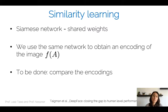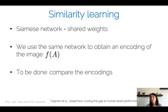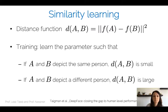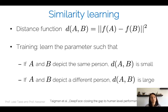Using the same network, we obtain encodings f(A) and f(B). We then compare these encodings: if A and B depict the same person, we want the encodings to be very similar; if different, very dissimilar. We define a distance function d(A, B) — for example the L2 norm — comparing f(A) with f(B). At training time, we learn network parameters such that if A and B depict the same person, d is small, and if they depict different people, d is large.